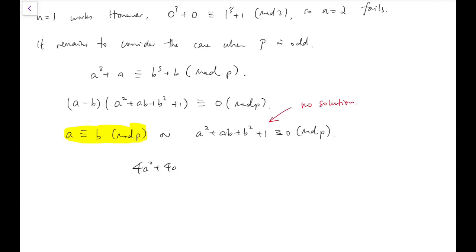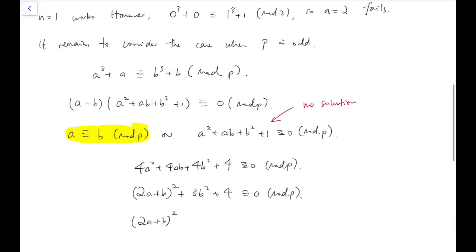So, because p is odd prime, I can simply multiply both sides by 4. So 4a² + 4ab + 4b² + 4 is congruent to 0 mod p. And then I have (2a + b)² + 3b² + 4 congruent to 0 mod p. And now, we have (2a + b)² + 4 ≡ -3b² mod p.